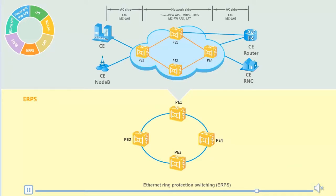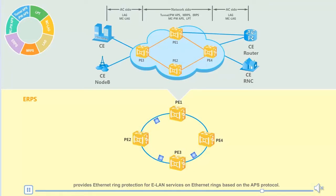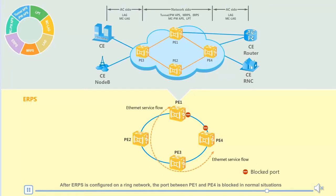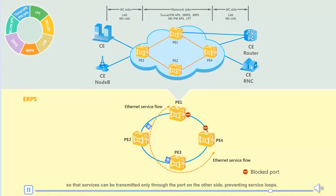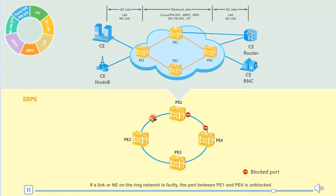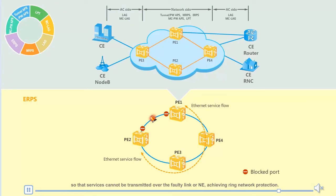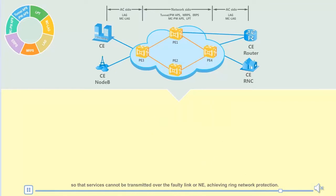Ethernet ring protection switching (ERPS) provides Ethernet ring protection for ELAN services on Ethernet rings based on the APS protocol. After ERPS is configured on a ring network, the port between PE1 and PE4 is blocked in normal situations so that services can be transmitted only through the port on the other side, preventing service loops. If a link or NE on the ring network is faulty, the port between PE1 and PE4 is unblocked so that services can be transmitted over an alternative path, achieving ring network protection.